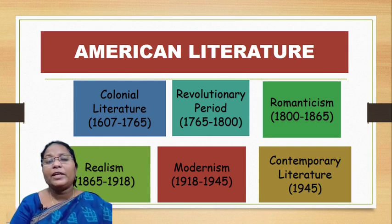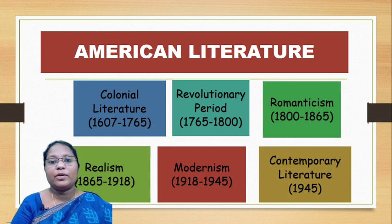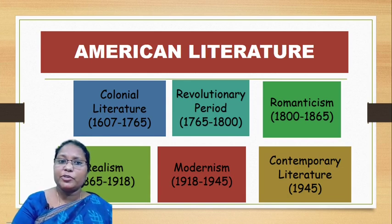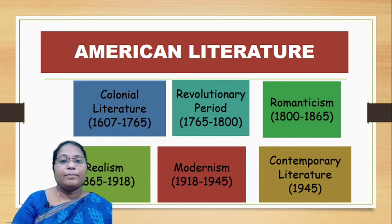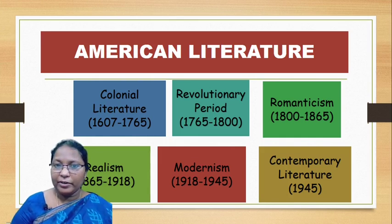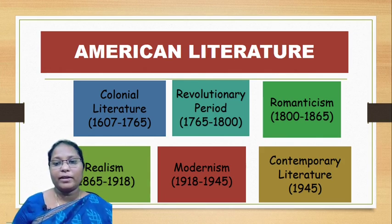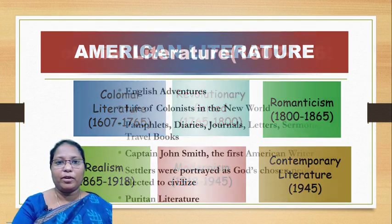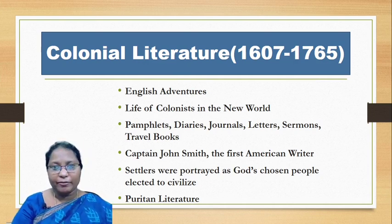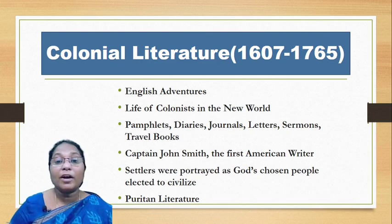American literature can be broadly classified into periods based on time: Colonial Literature from 1607 to 1765, the Revolutionary period from 1765 to 1800, Romanticism from 1800 to 1865, Realism from 1865 to 1918, Modernism from 1918 to 1945, and finally Contemporary Literature from 1945 onward.